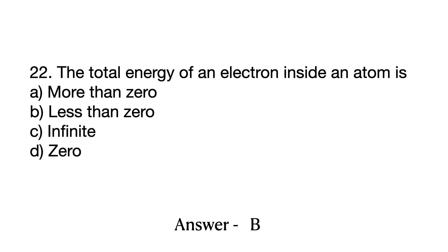Question number 22 is about the total energy of an electron inside an atom. This is a specific question from physics. You must remember how kinetic energy is calculated for an electron, and when you add the potential energy to it, the total expression is negative. So the answer will be less than zero.